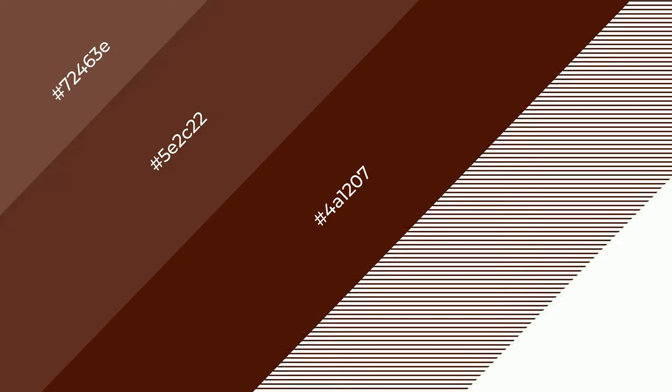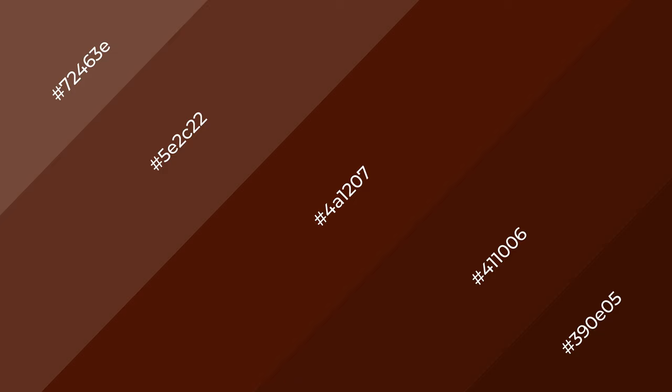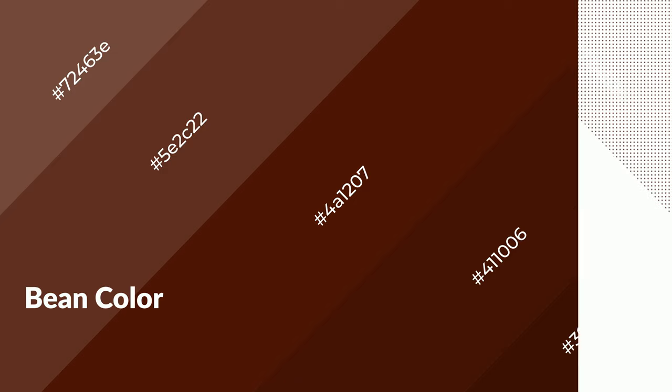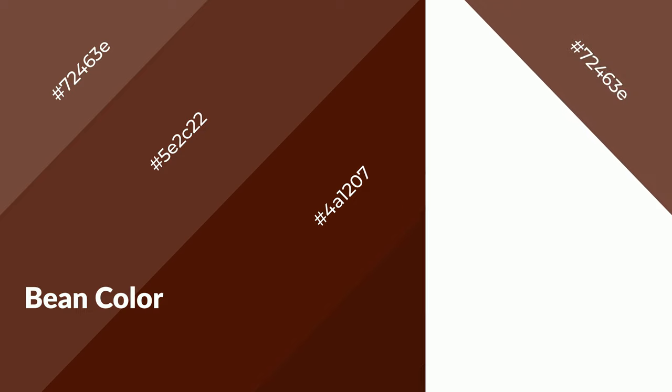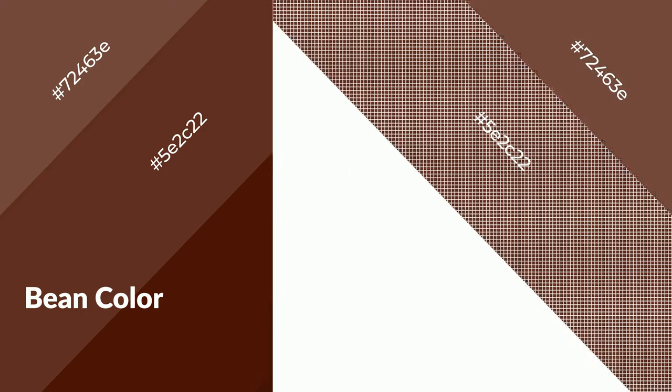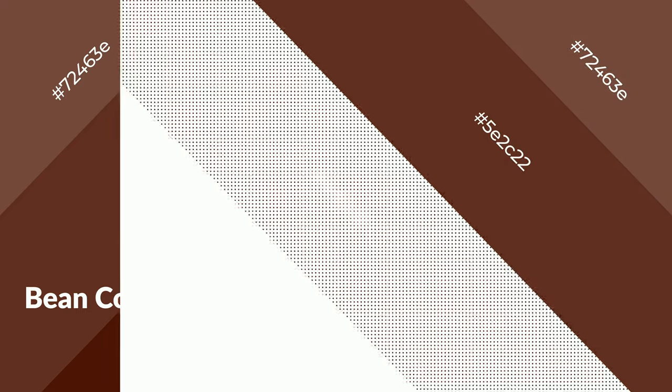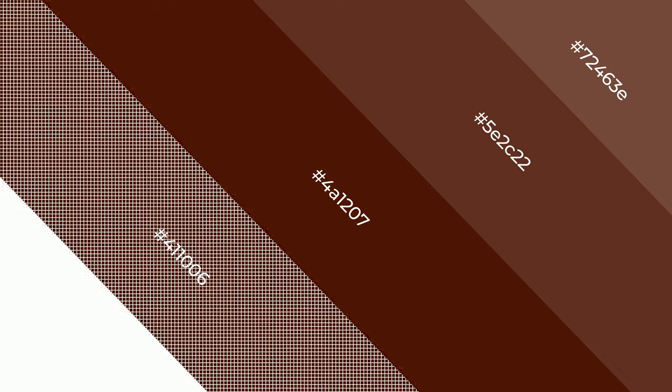3D effects, layers and shades create depth and drama. Bean is a warm color, and it emits cozier and active emotion. Warm colors are symbols of warmth, fire, heat, and sunshine.